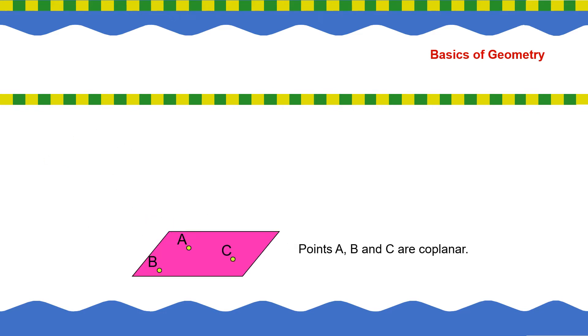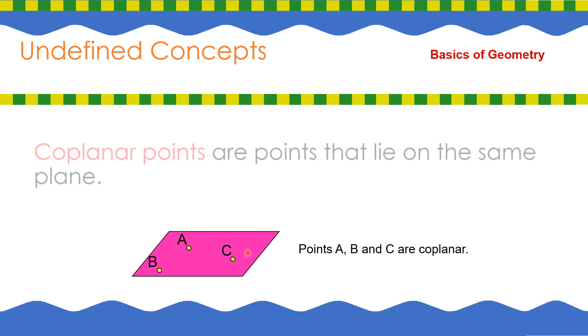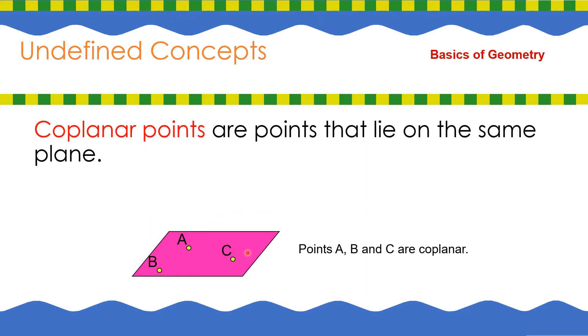Alright. Next, we have the plane ABC. With these are called co-planar points. Now, what is co-planar points? Alright. Another undefined concept. Co-planar points are points that lie on the same plane.